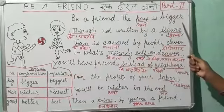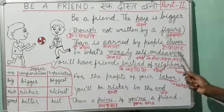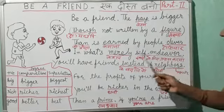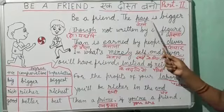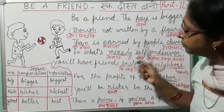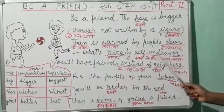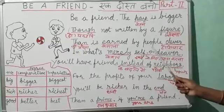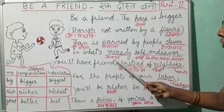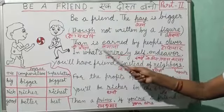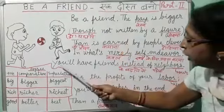The pay is bigger than is earned by people clever. Hoshyaar log ke dwara jitna kamaaya jaata hai, uski apeksha ye dost banne ka payment jo bada hai — in what's merely self endeavor. Ab konse log ke dwara jo swayam ke liye keval prayas karte hain, unke payment se ye payment zyada bada hai dost banne ka.